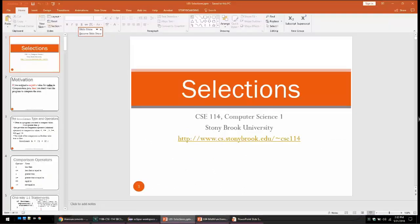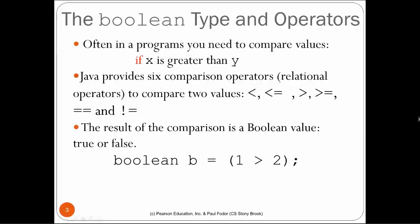Java provides six comparison operators: less than, less than or equal, greater than, greater than or equal, equal (double equals), and not equal (exclamation equals). The result of any comparison of two numbers is a boolean value — true or false. For example, assigning 'one greater than two' to a boolean variable B gives false.